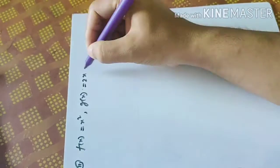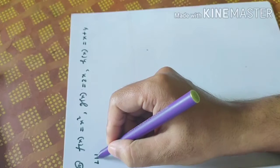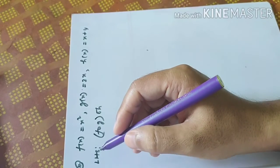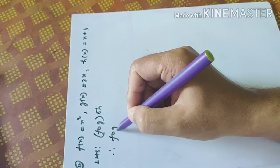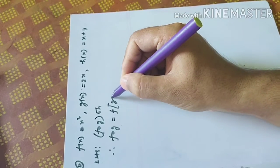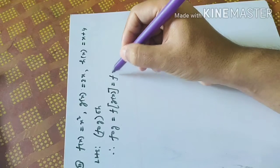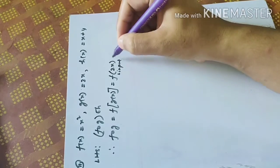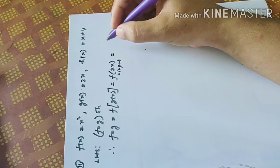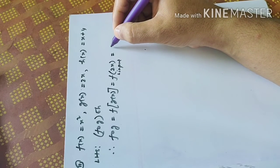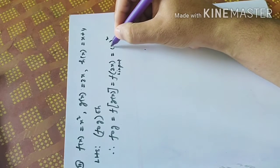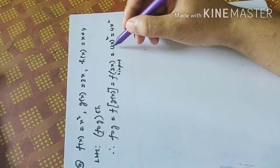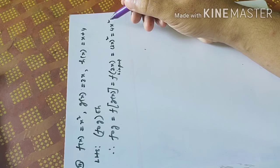Let us see the next question. For the left-hand side, find (FOG)OH. First, find FOG: f(g(x)). g(x) is 2x, so 2x becomes the input for f. f(x) is x square. With input 2x, we get (2x) square, which equals 4x square. So FOG equals 4x square.